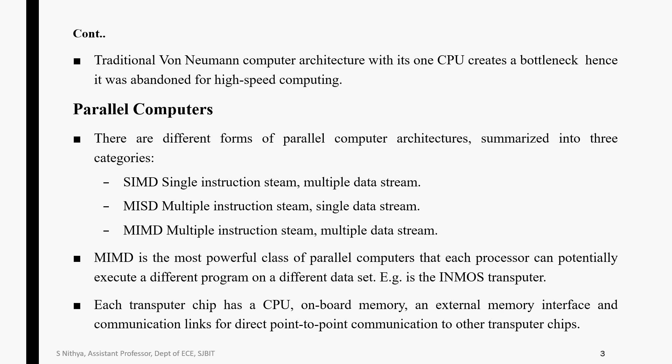The traditional Von Neumann computer architecture, with its one CPU, creates a bottleneck and was therefore abandoned for high-speed computing. There are many specialized processors which include fast digital signal processors, parallel computers, transputers, and special RISC. Here we are going to discuss only two topics: parallel computers and digital signal processors.